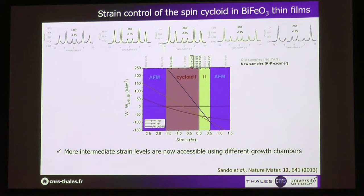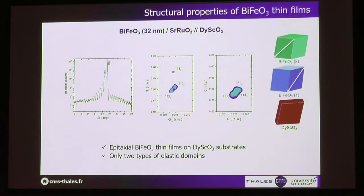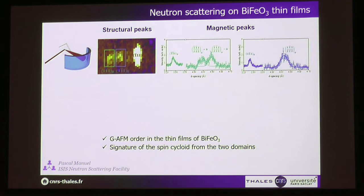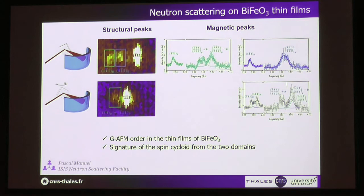Looking at films on dysprosium scandate, we detect two elastic domains by X-ray diffraction, and these films have a striped domain structure with 71-degree domain walls. We examined them by neutron diffraction with the group of Pascal Manuel in Oxford. The two elastic domains were identified on the 1/2, 1/2, 1/2 peak. For one domain there is a single peak, but for the other there is a splitting that is an indication of the spin cycloid. When we rotate the scattering plane, we see the splitting coming from the second variant.